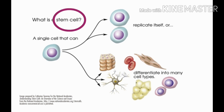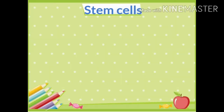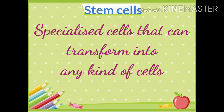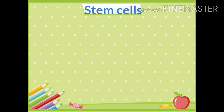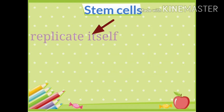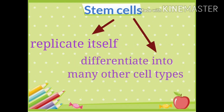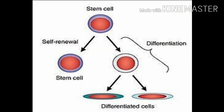So, what are stem cells? Stem cells are specialized cells that can transform into any kind of cell. Stem cells can also replicate themselves or differentiate into many other cell types.